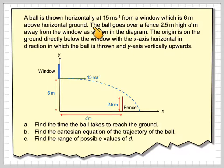A ball is thrown horizontally at 15 metres per second from a window which is 6 metres above the horizontal ground. The ball goes over a fence 2.5 metres high, 10 metres away from the window as shown in the diagram.